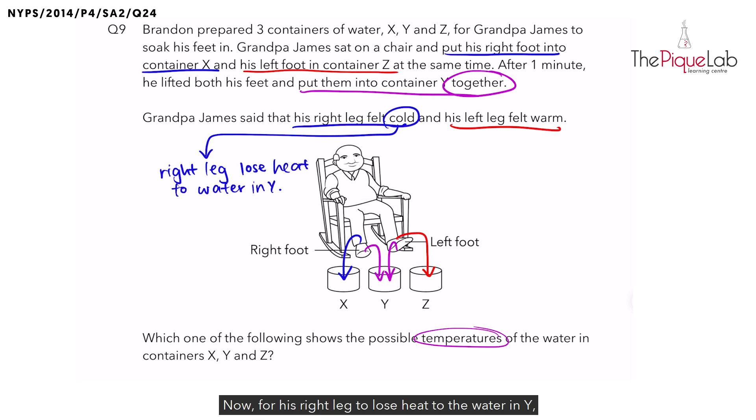Now for his right leg to lose heat to the water in Y, should the right leg be warmer or cooler than the water in Y? Recall what is the property of heat? We always say that heat travels from a warmer to cooler region. So if the right leg loses heat to the water in Y, it means that the right leg must be warmer and the water in Y should be cooler.